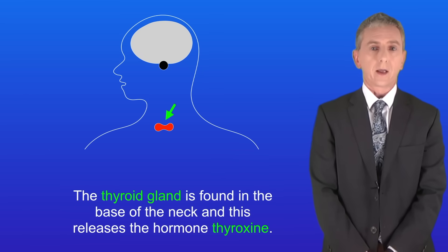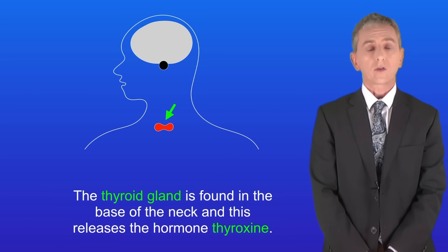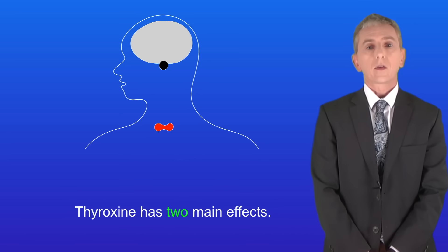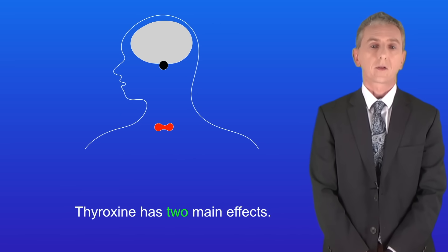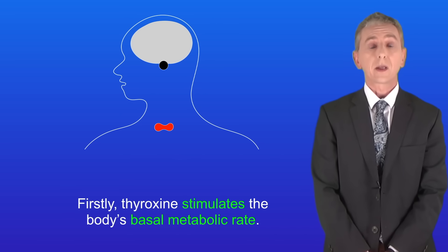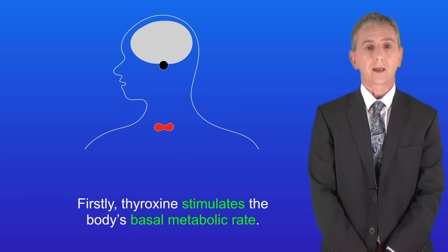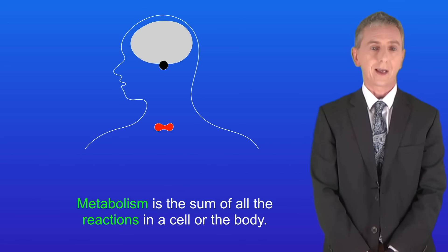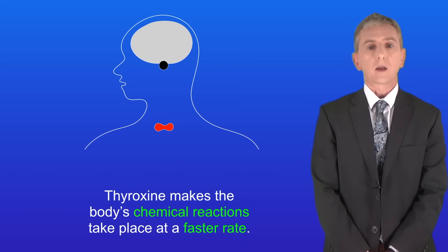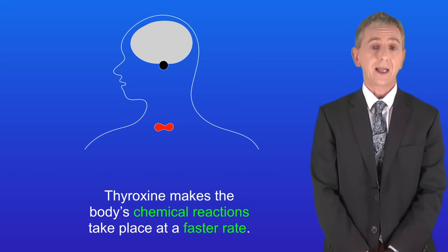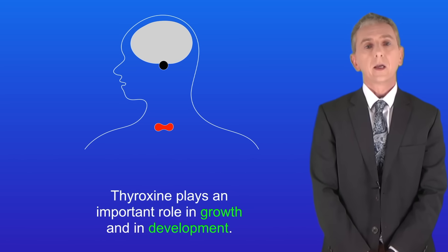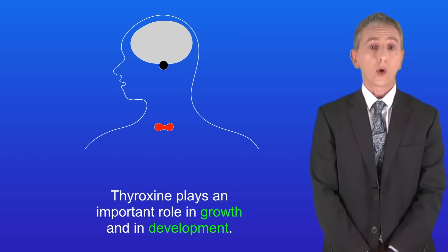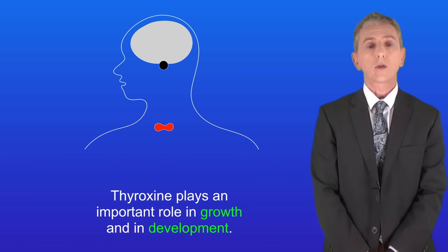The thyroid gland is found in the base of the neck and this releases the hormone thyroxine. Thyroxine has two main effects. Firstly, thyroxine stimulates the body's basal metabolic rate — remember that metabolism is the sum of all the reactions in a cell or the body — so in other words thyroxine makes the body's chemical reactions take place at a faster rate. Secondly, thyroxine plays an important role in growth and in development.